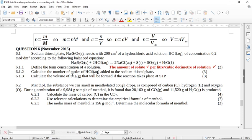Sodium thiosulfate reacts with 200 cubic centimeters of hydrochloric acid solution of concentration 0.2 moles per cubic decimeter according to the following balanced equation: Na₂S₂O₃ + 2HCl → 2NaCl + S(s) + SO₂ + H₂O.